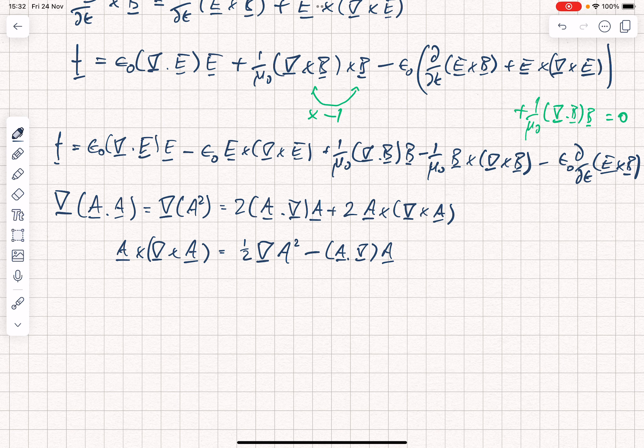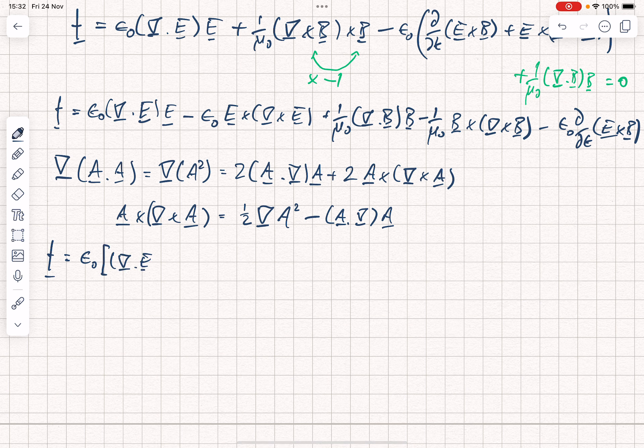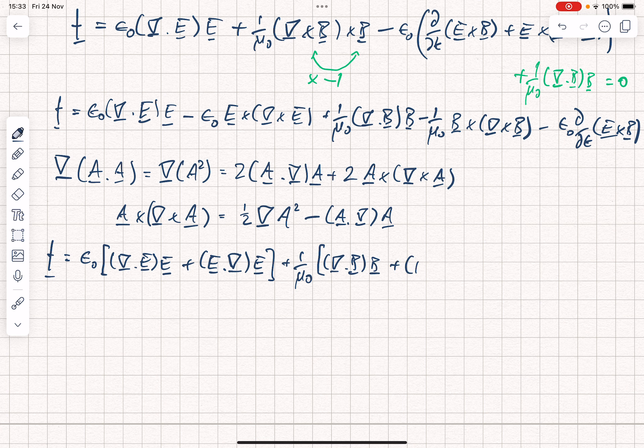So when we've done all of that, we can write the following. F, this force per unit volume, is equal to epsilon 0 into div E, E plus E dot nabla E, and notice that those are different things, plus 1 over mu 0 into div B, B plus B dot nabla B minus the gradient of the energy density, minus epsilon 0 mu 0 dN by dt.